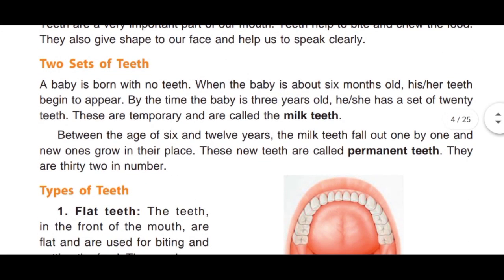We get two sets of teeth in our lifetime. A baby is born with no teeth. When the baby is about six months old, his or her teeth begin to appear. By the time the baby is three years old, he or she has a set of twenty teeth. These are temporary and are called milk teeth. Jab ek bachcha teen varsh ka ho jaata hai to uske munh mein 20 dant aa jaate hain jise milk teeth kehte hain.